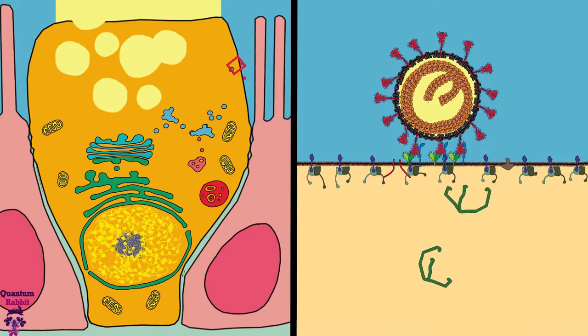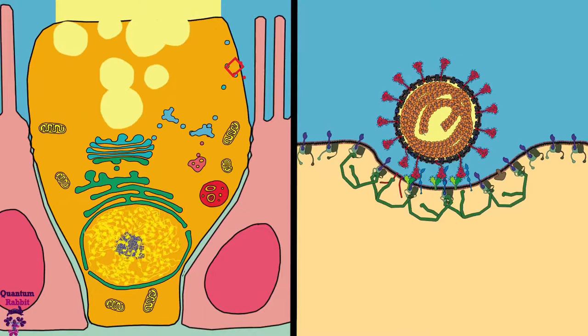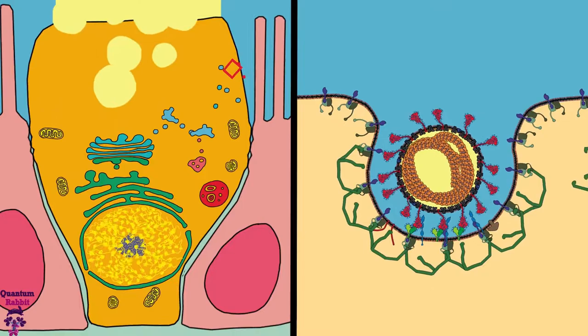Goblet cells produce huge vesicles filled with mucus and proteins. This constantly adds membrane to the cell. To avoid membrane overgrowth, the cell needs to endocytose the same amount of membrane that it exocytoses.